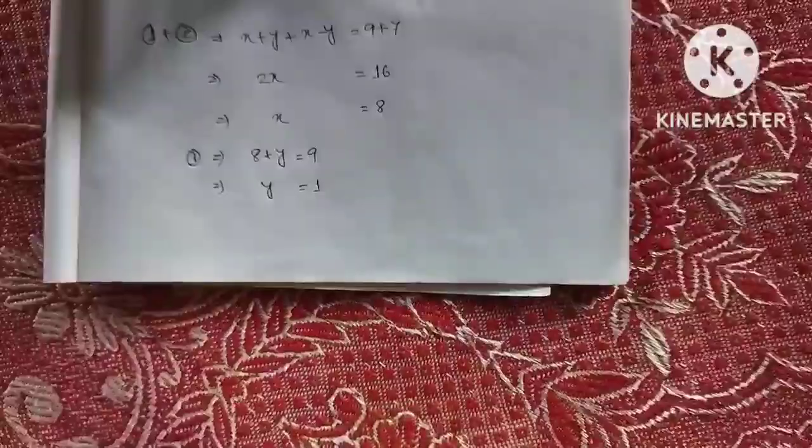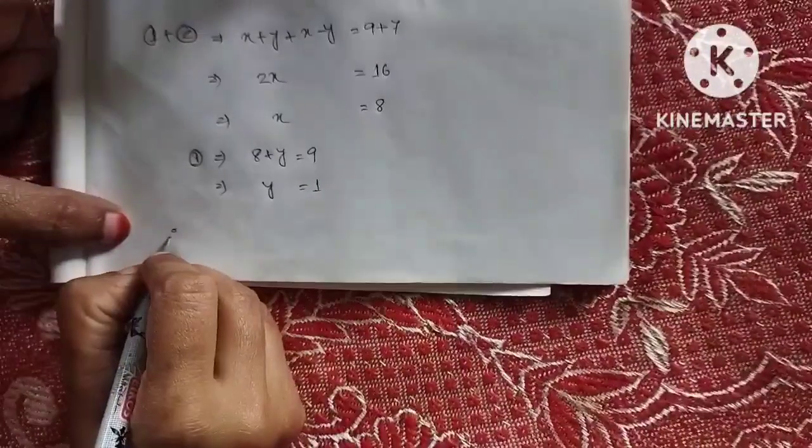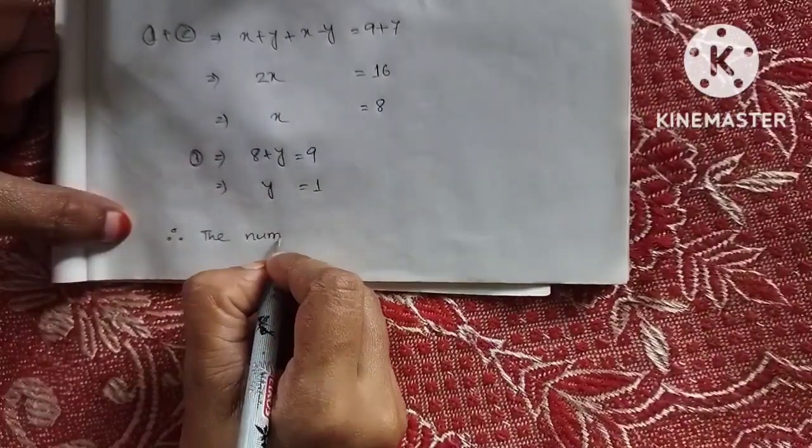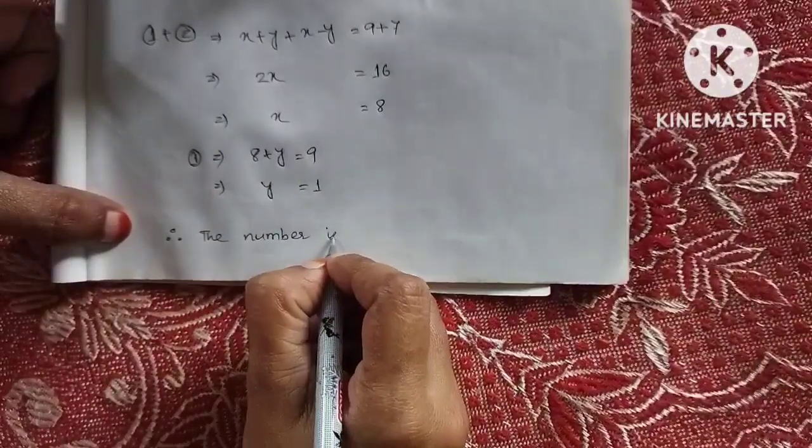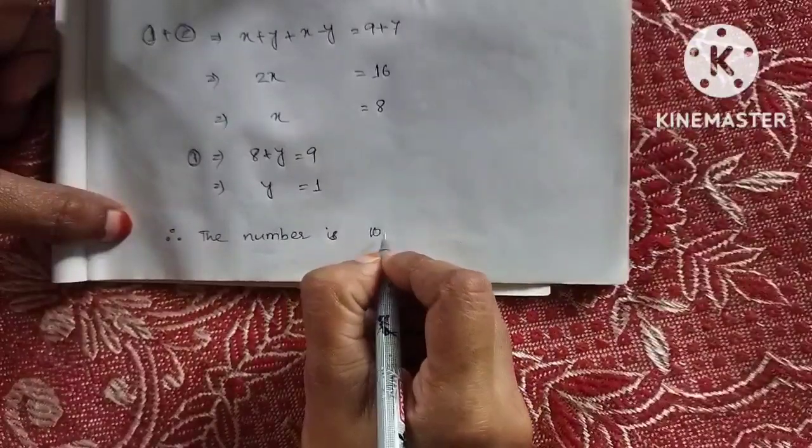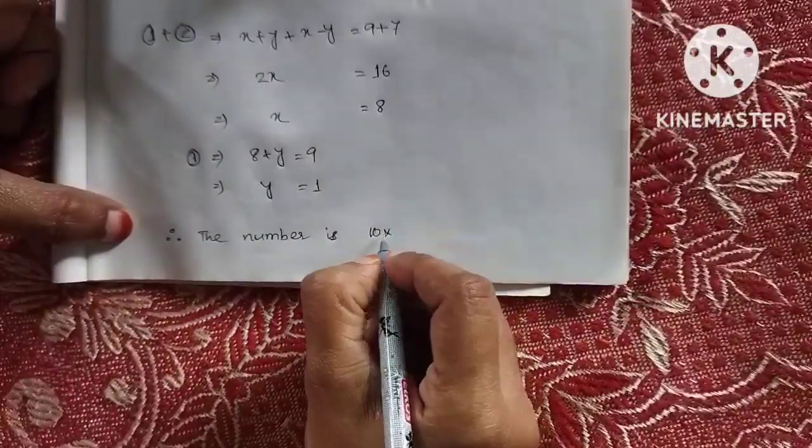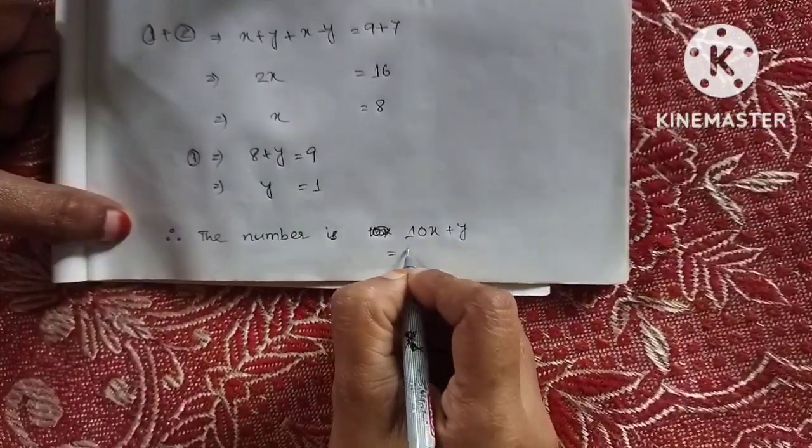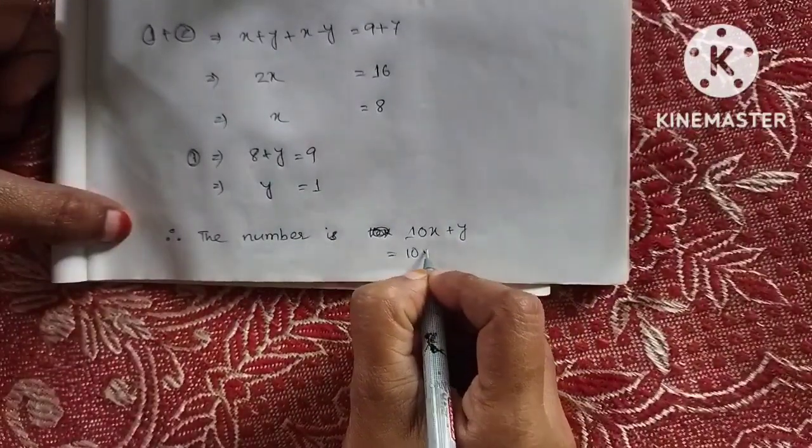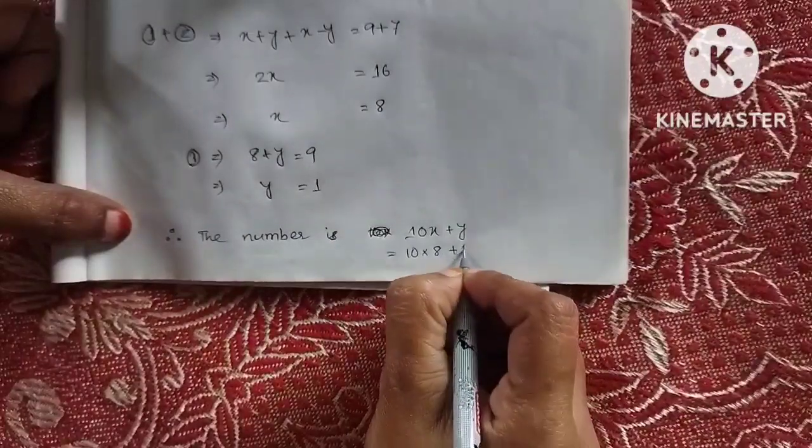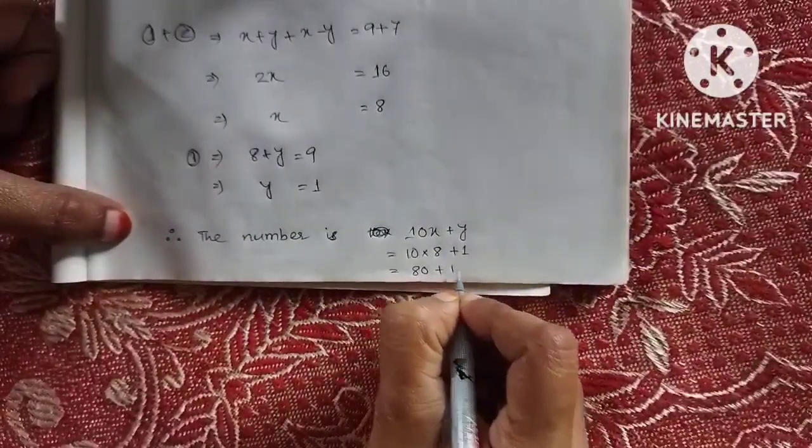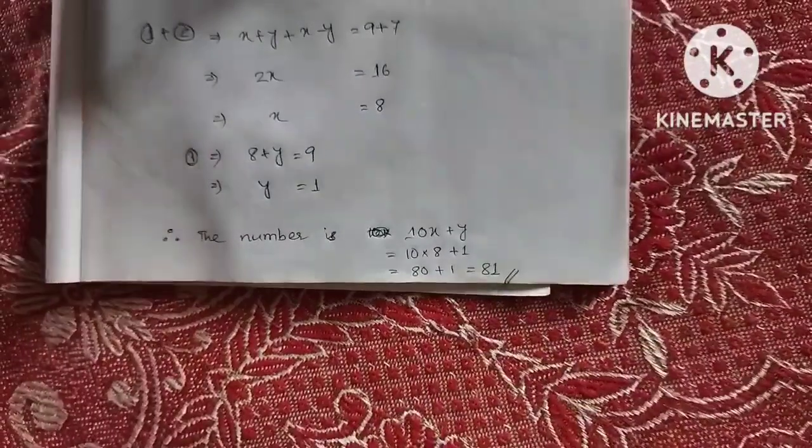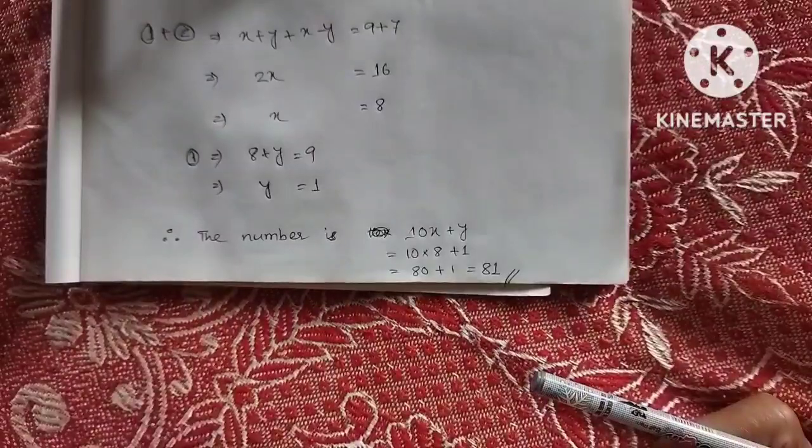Therefore, y equals 1. The number is 10 times x plus y, which is 10 times 8 plus 1, equals 81.